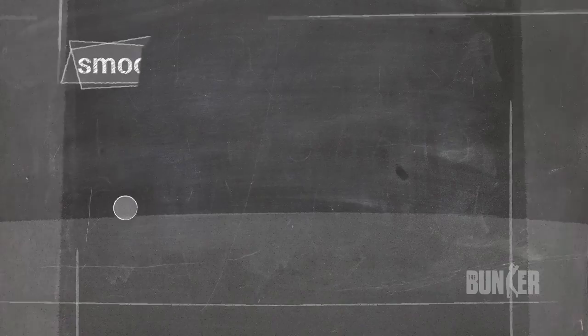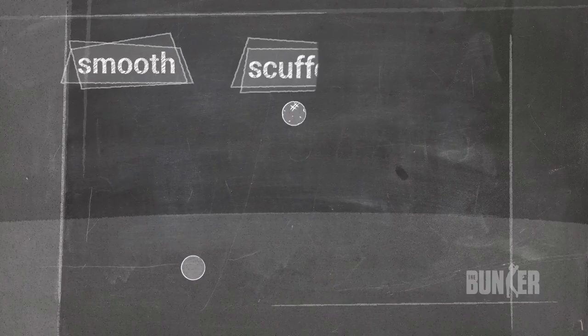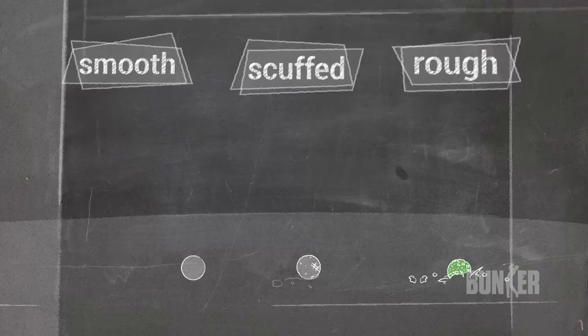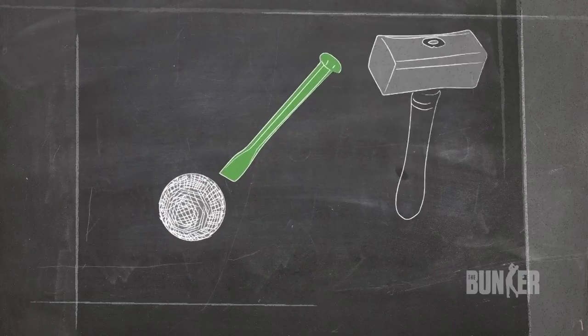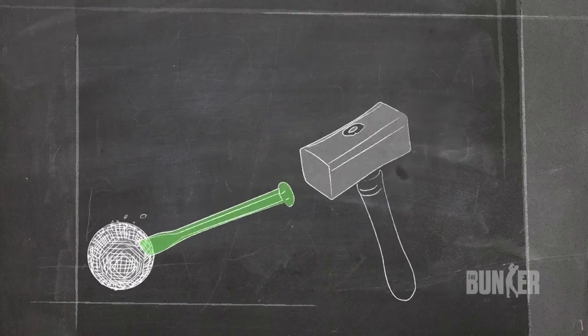Over time, golfers started to notice that when these smooth balls became scuffed and nicked, they would travel faster. Golf ball manufacturers then started to create deliberate protrusions with hammers and chisels.